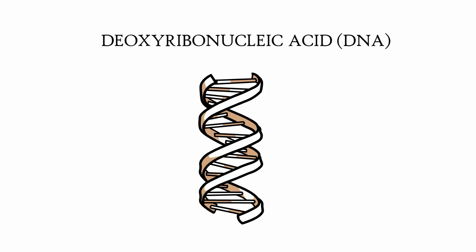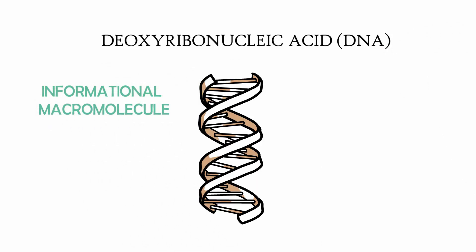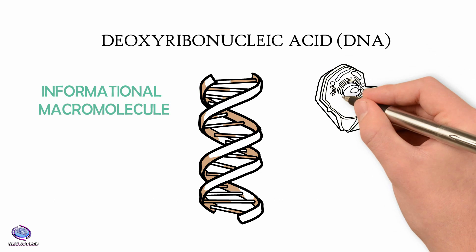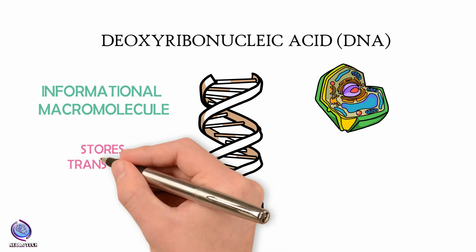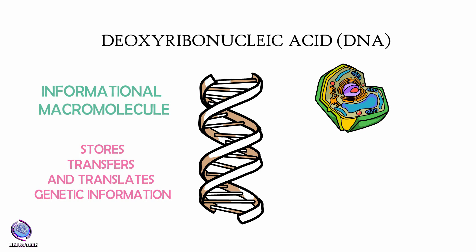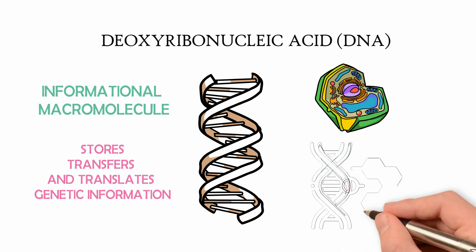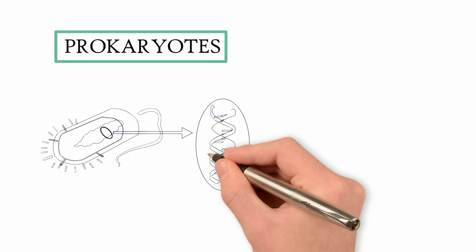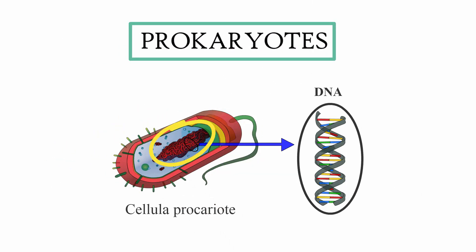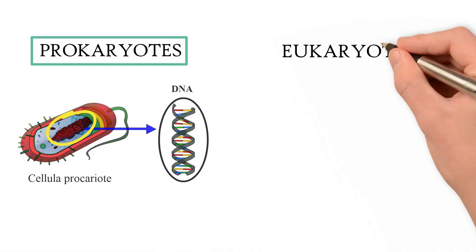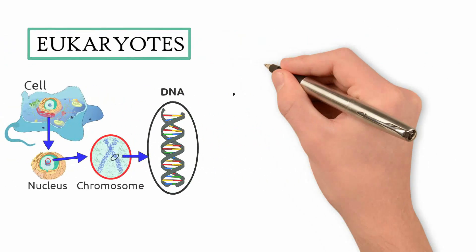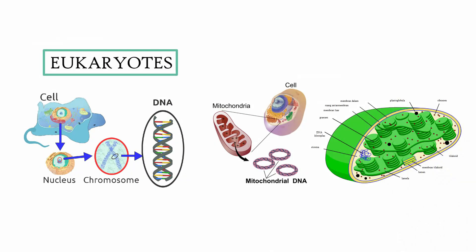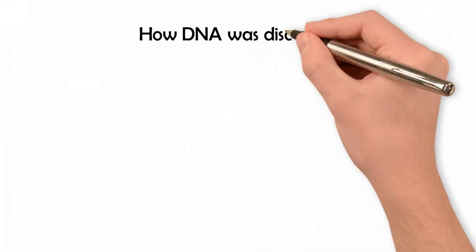Deoxyribonucleic Acid, also abbreviated as DNA, is the principal informational macromolecule of the cell, which stores, translates, and transfers genetic information. In prokaryotes, DNA is found mostly in the nuclear zone, whereas in eukaryotes, it is found in the nucleus, mitochondria, and chloroplast.